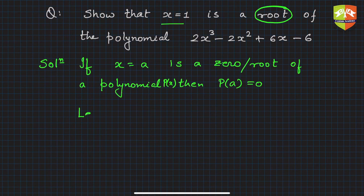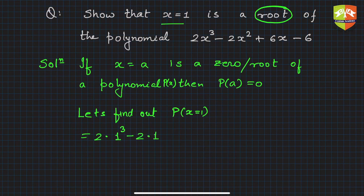What is the value of P(x) if x equals 1? This will be simply 2 times 1³ minus 2 times 1² plus 6 times 1 minus 6. You have to simply substitute x by 1. So let's find the value: this is 2 - 2 + 6 - 6, and hence this is indeed 0.